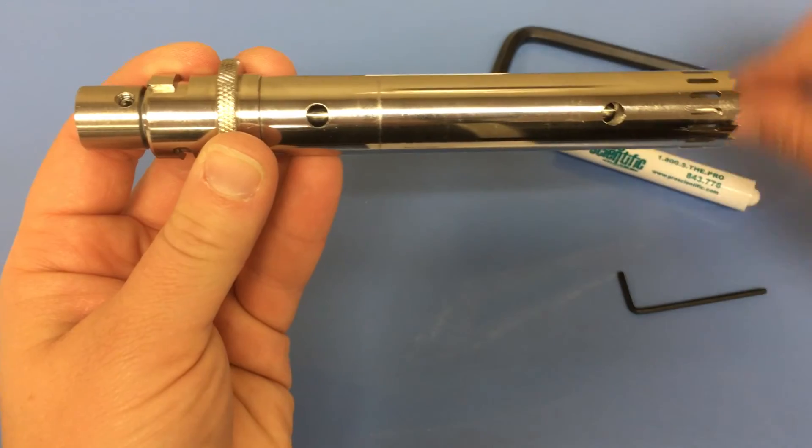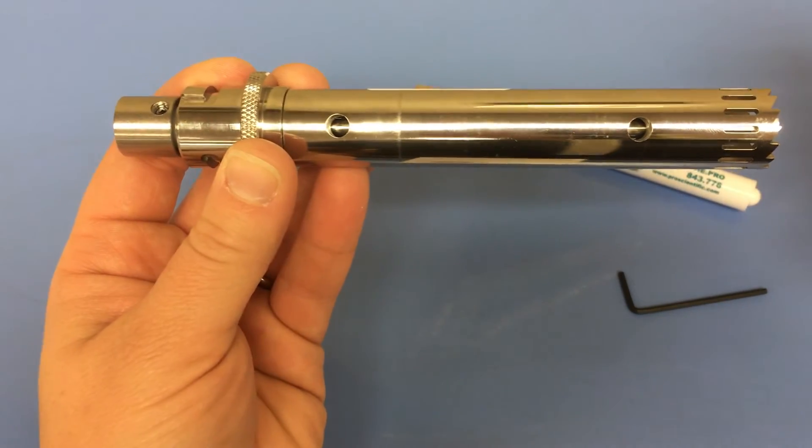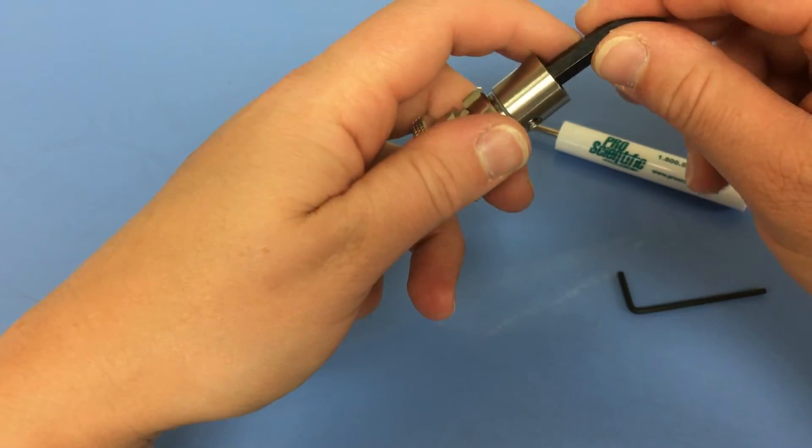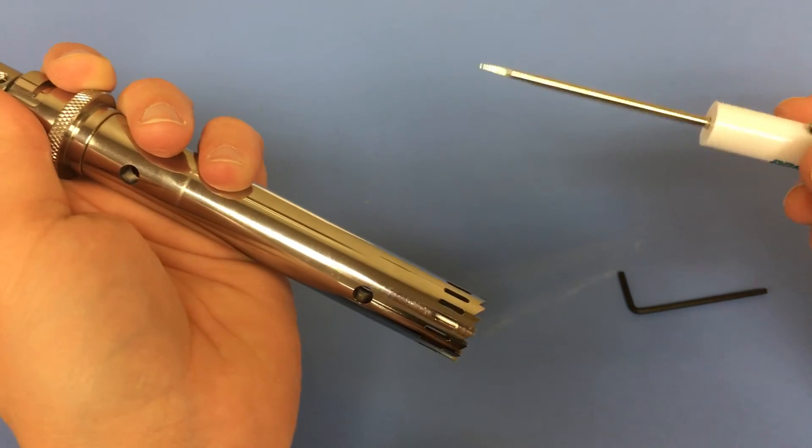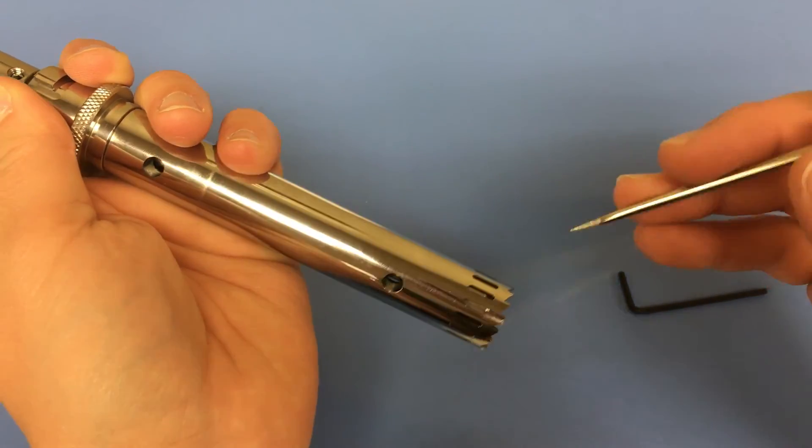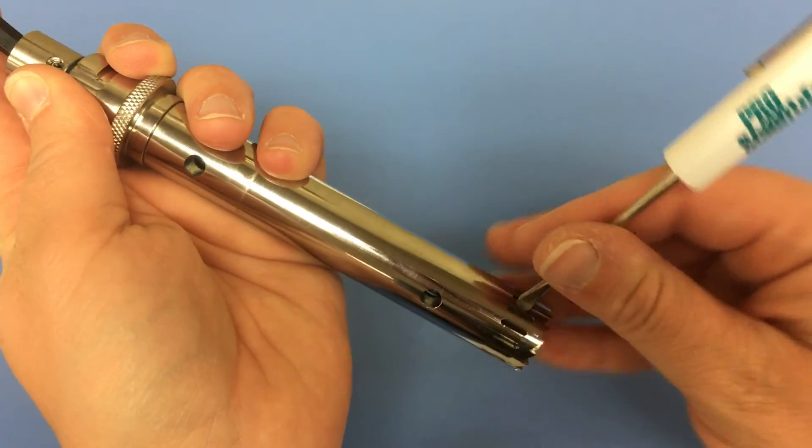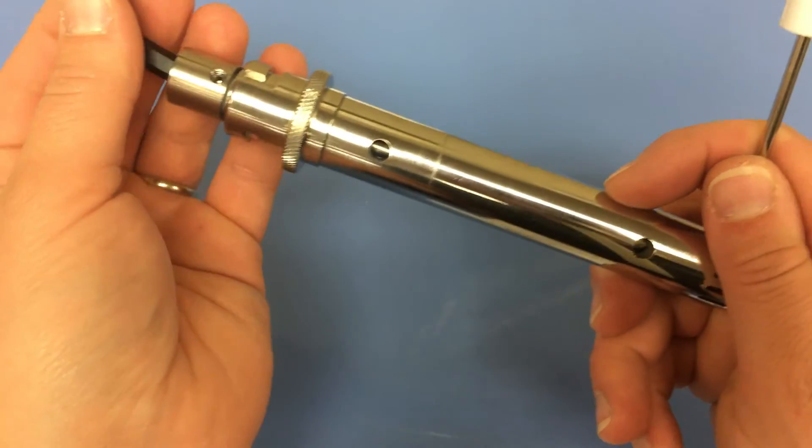Insert the quarter inch hex key into the end of the rotor shaft collar and insert the screwdriver end into the rotor knife. Turn the hex wrench clockwise to confirm it's tight.